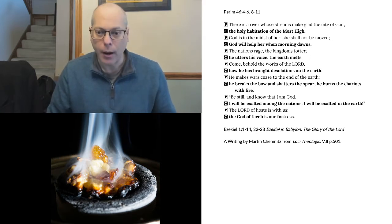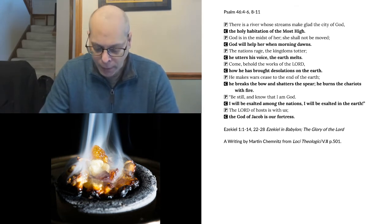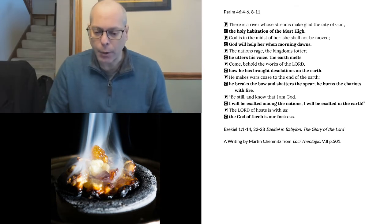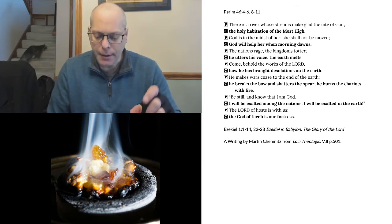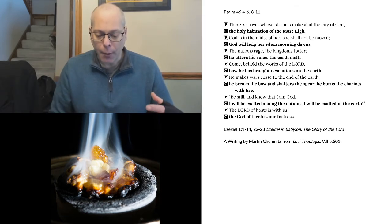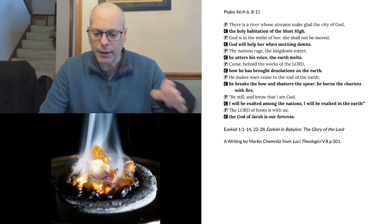Our writing today is from Martin Chemnitz, from his Loci Theologicae, volume 2, page 501. Whenever you see one of the early church fathers, or one of the early Lutheran fathers, having these books called Loci, or Loci Theologicae, or Loci Communes, basically means Loci means locations. And then Communes means communal. Theologicae, of course, is theology. So they wrote these books of dogmatics, basically. And what they did was they got a great big blank book, and they separated it into different sections. And in each section, they would take their notes as they read, and they would write it in the correct section,